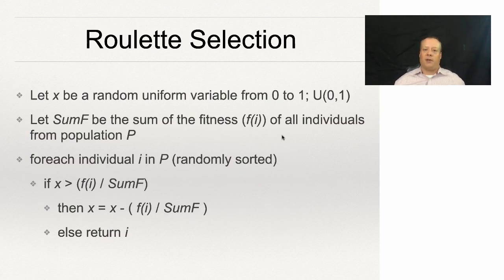Roulette selection, on the other hand: we're going to let X be a random uniform variable from zero to one. We're going to let the sum of F be the sum of the fitnesses of all individuals from the population. For each individual i in P, randomly sorted, we're going to ask if X is greater than f(i) divided by that sum of F.